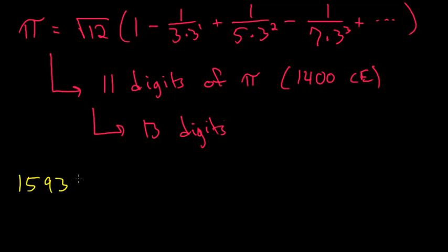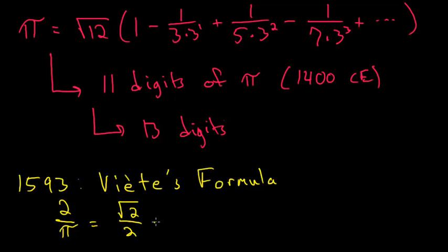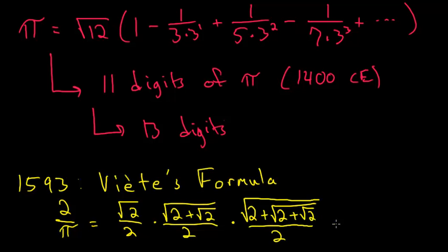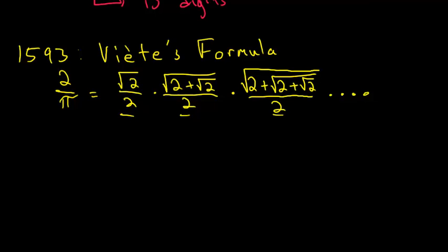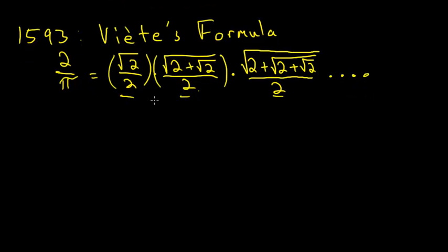After Madhava, in the year 1593, the French mathematician Francois Viète found a product formula for pi. Viète's formula is that 2 divided by pi is equal to the square root of 2 divided by 2 multiplied by the square root of 2 plus root 2 divided by 2 multiplied by the square root of 2 plus root 2 plus root 2 divided by 2. Since each of these are multiplied together, we would call this an infinite product. Viète was able to use this product by multiplying term by term to find 9 digits of pi.